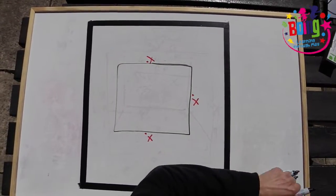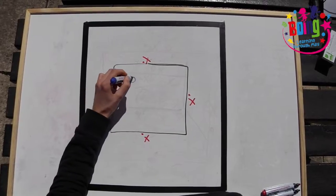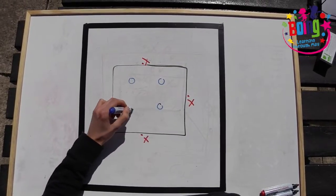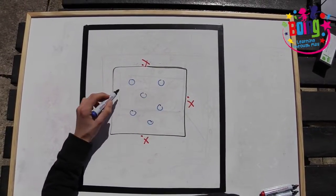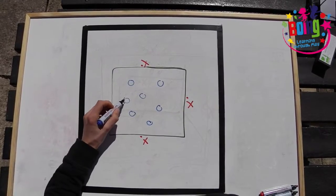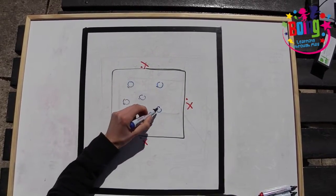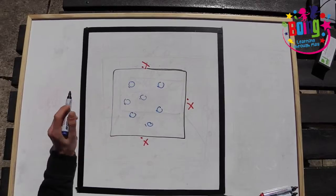These are the throwers. Inside the square, seven children must stand, each holding a bean bag. These are the dodgers.